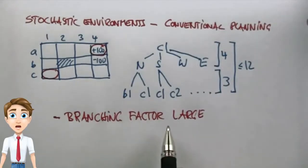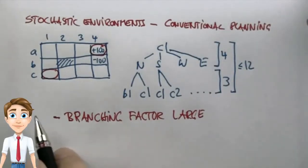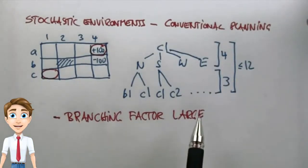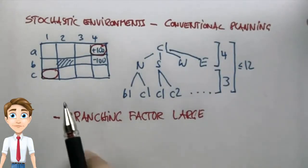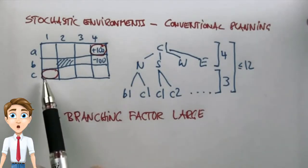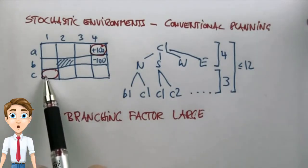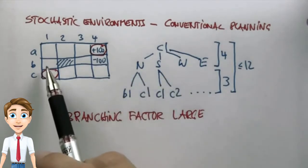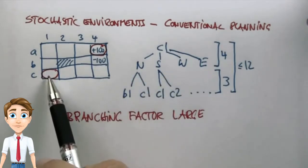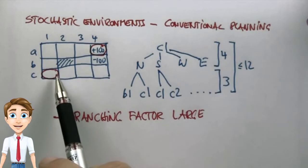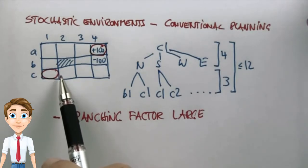To understand the branching factor, let me quiz you on how many states you can possibly reach from any other state. As an example, from C1, you can reach under any action choice B1, C1, and C2, which gives you an effective branching factor of 3.